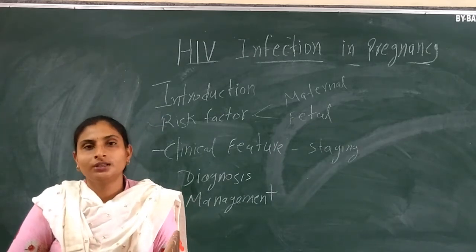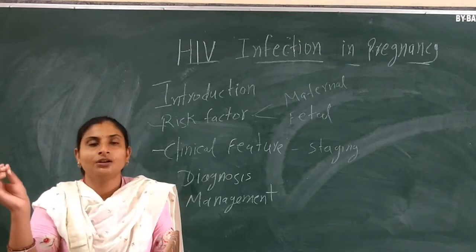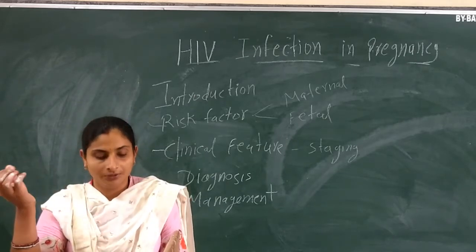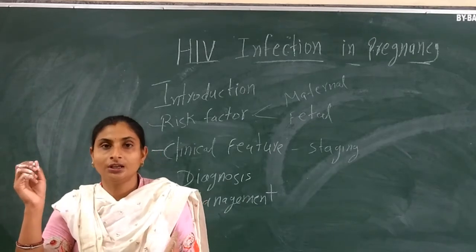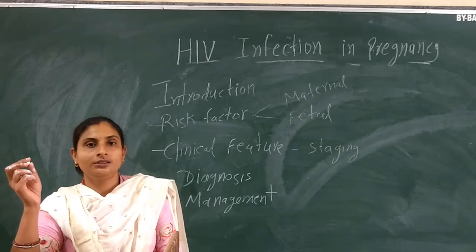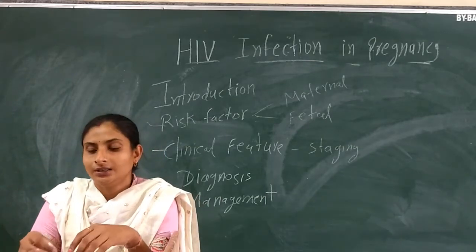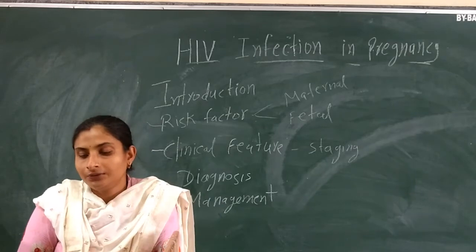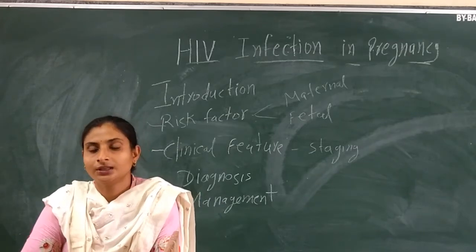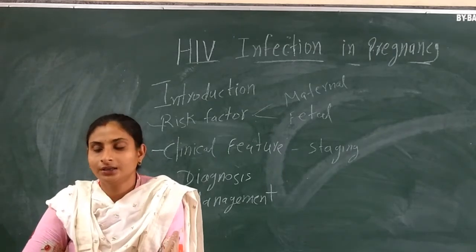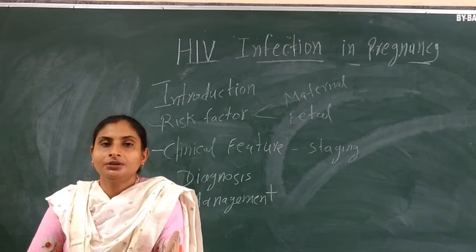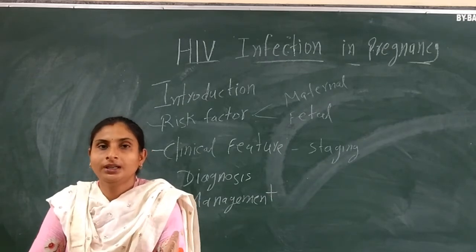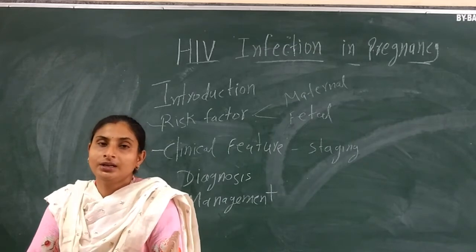In Stage 3, weight loss is more than 10%, chronic diarrhea lasting more than one month, persistent fever more than one month at above 37.5 degrees Celsius, pulmonary tuberculosis, ulcerative colitis or gastritis, anemia, neutropenia, or thrombocytopenia. Stage 4 is advanced symptomatic HIV — AIDS-defining illness and HIV wasting syndrome.